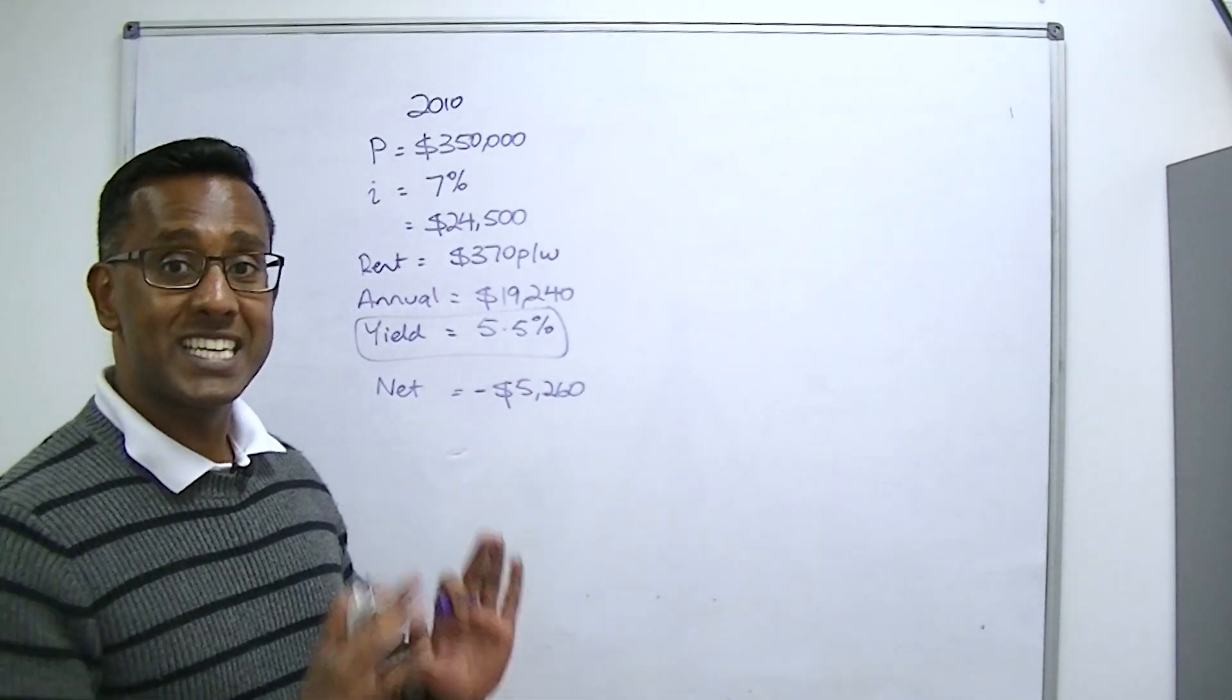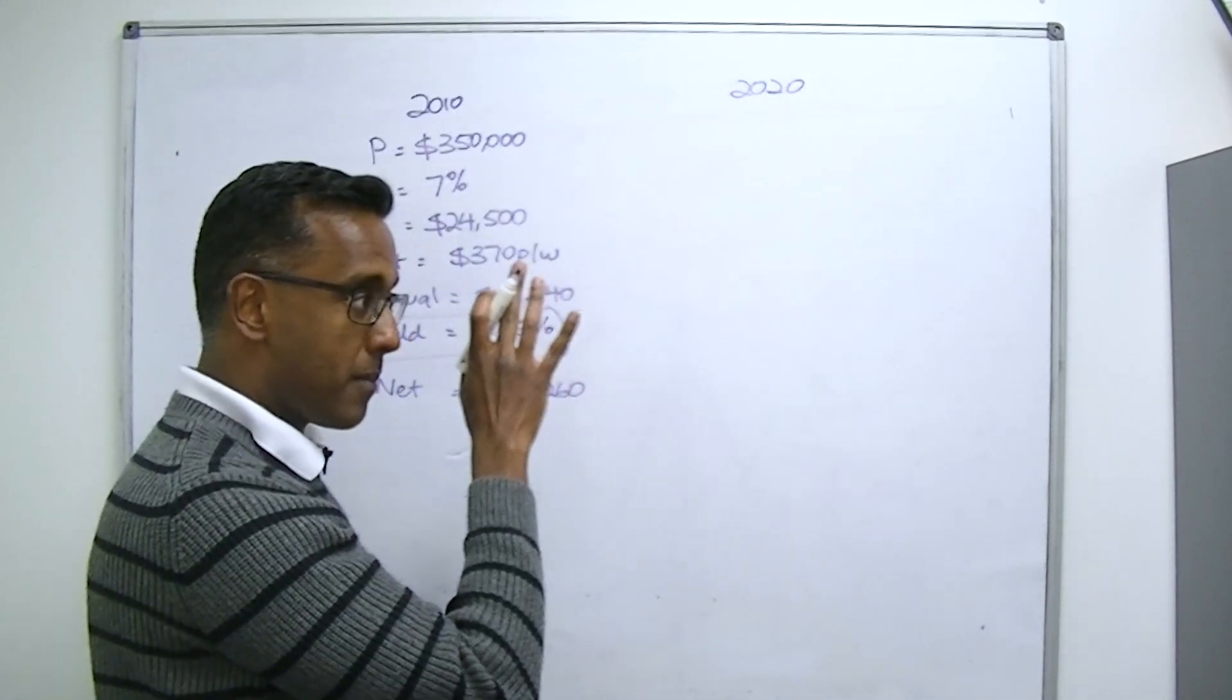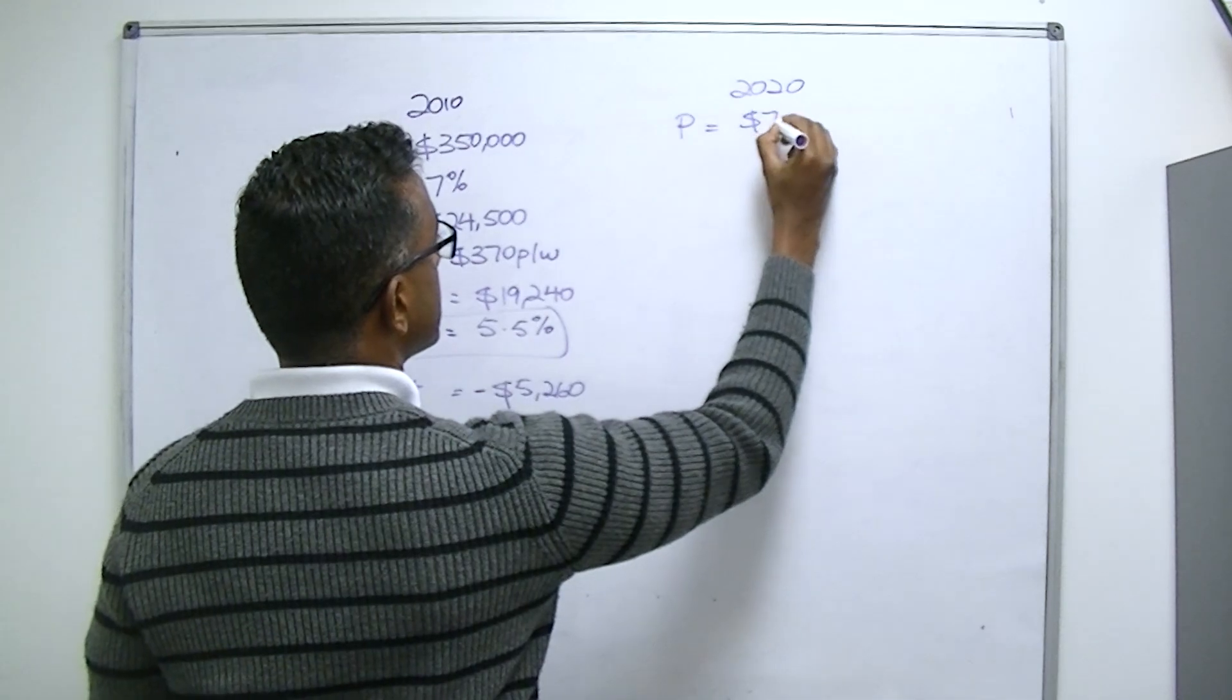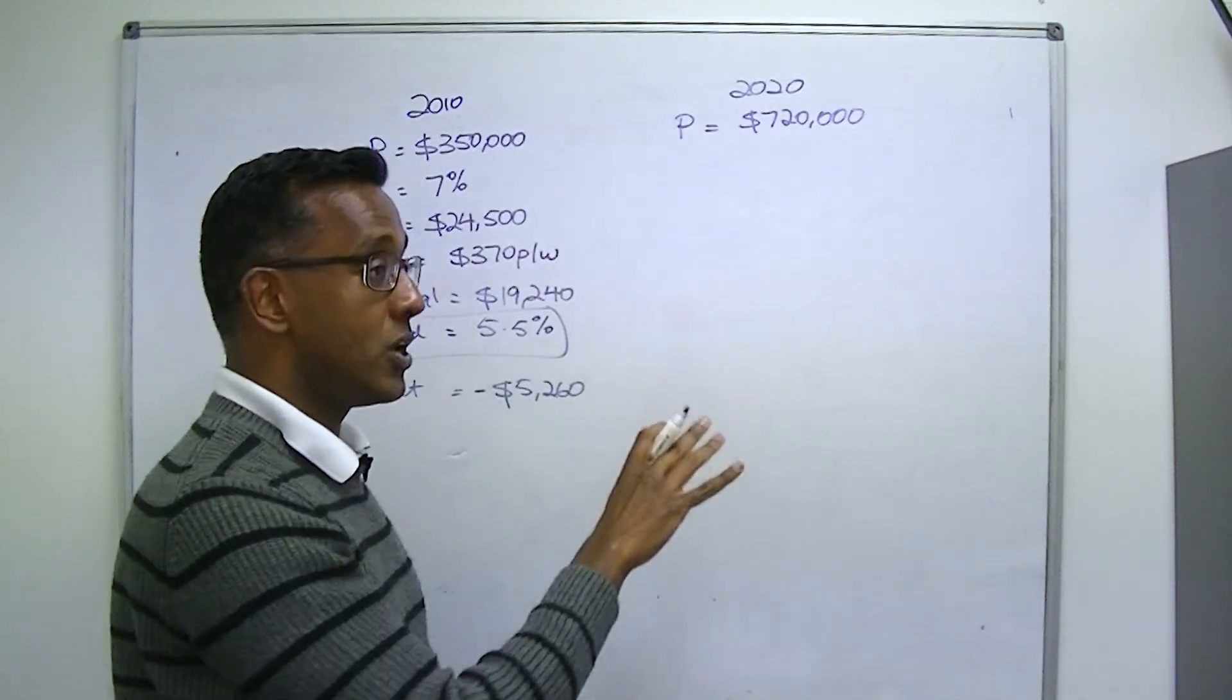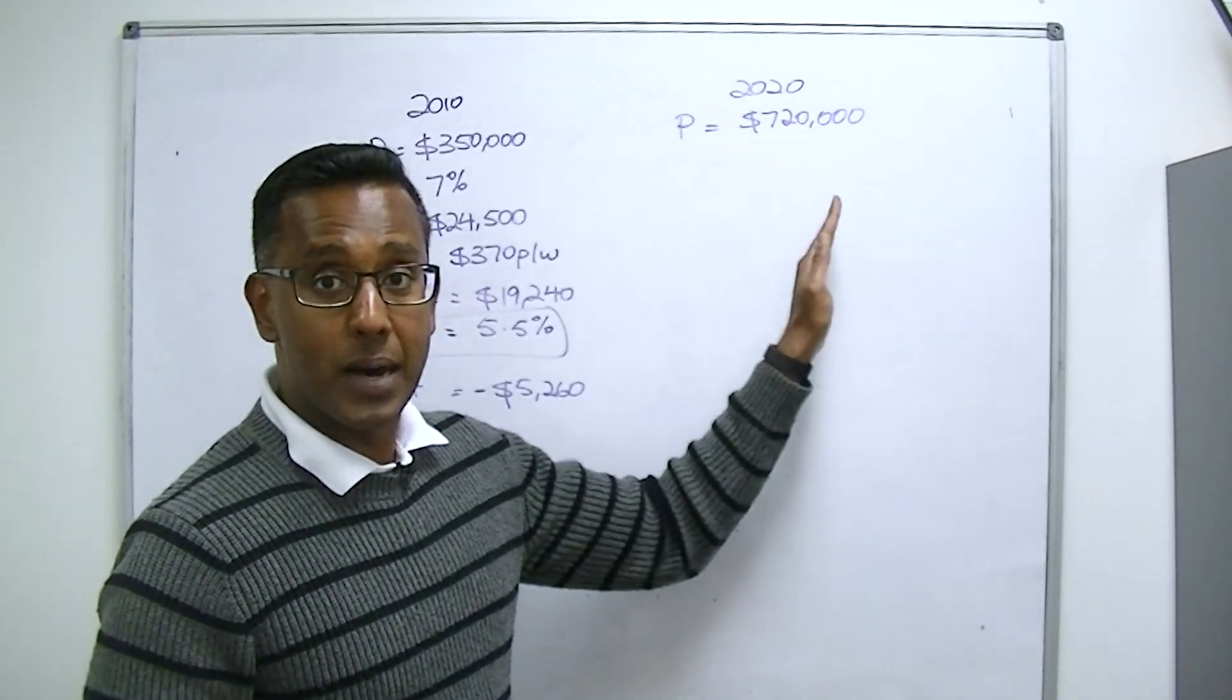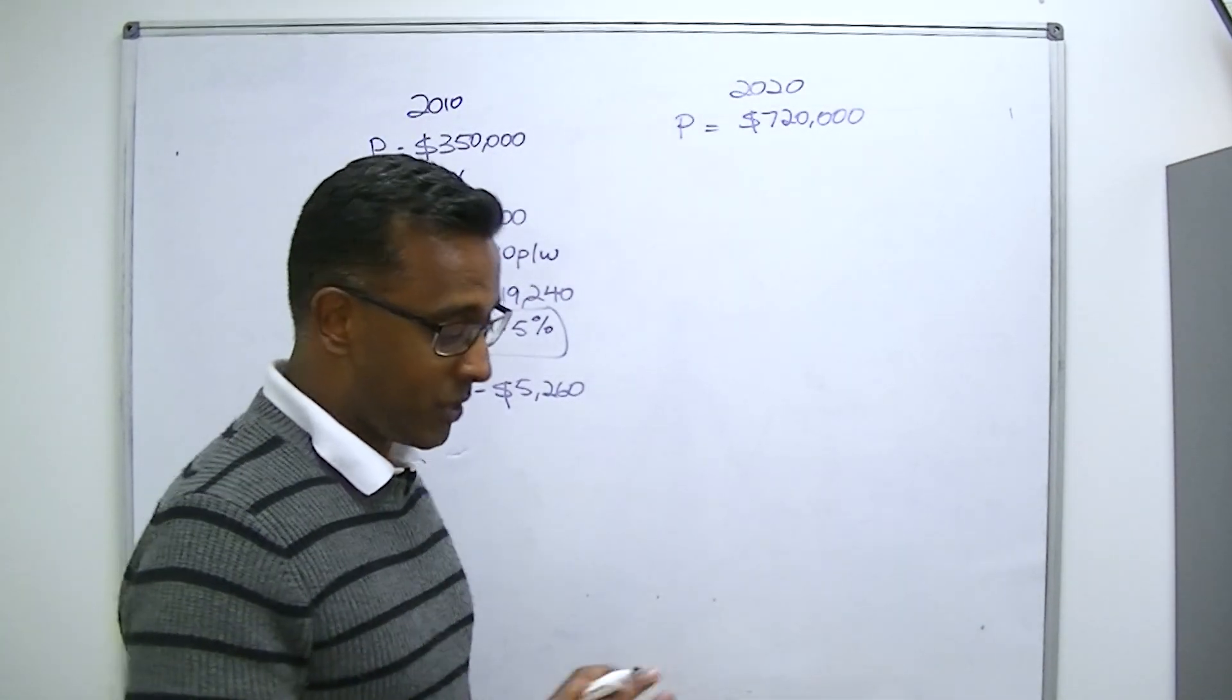Now, that was a yield of 5.5%. Imagine if you could find an investment property in Sydney or in Melbourne that gave you a yield of 5.5%. You'd be doing cartwheels. That'd be a very good result.